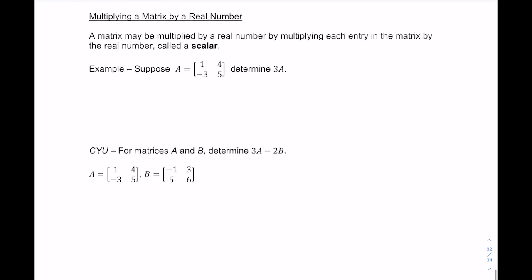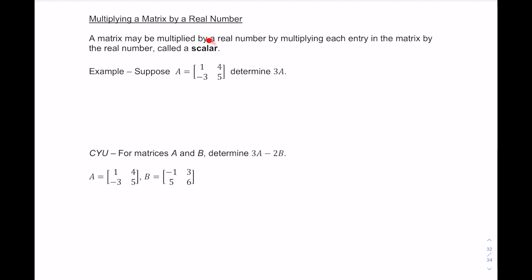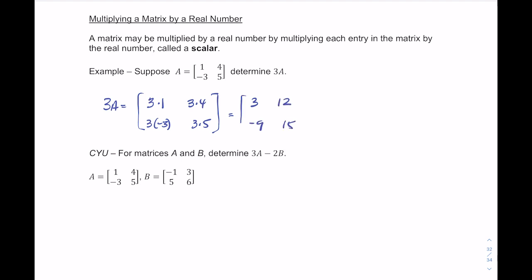Multiplying by a real number — called a scalar — is straightforward. All you do is multiply each entry in the matrix by that number. For instance, given matrix A, to find 3 times A, you multiply each entry by 3: 3 times 1, 3 times 4, 3 times negative 3, and 3 times 5, giving you the result.